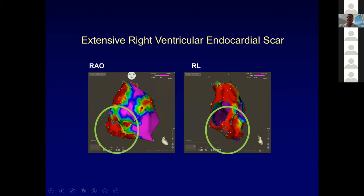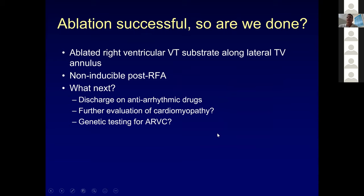This is the ablation — very similar to where we ablated a gentleman with ARVD last week, kind of here on this lateral tricuspid valve, some dense scar here. This is always a difficult area to get contact in. This is the backside of the tricuspid valve — we ablated there, it went great, everybody high-fived. Not inducible. So what next? Do we discharge on antiarrhythmics? Is there further evaluation of the cardiomyopathy? Do we genetically test?